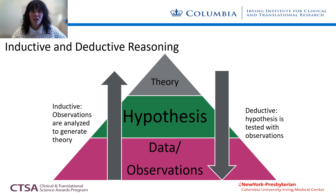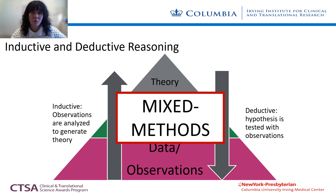In terms of knowledge production or epistemology, quantitative methods are primarily deductive. They move top-down from theory to the formulation of a hypothesis and confirmation or rejection by individual observations. Whereas qualitative methods are primarily inductive — they move bottom-up from particular observations to patterns, to the formulation of a hypothesis, and then to theories. Mixed methods can follow both inductive and deductive reasoning and bring them together in a single study.